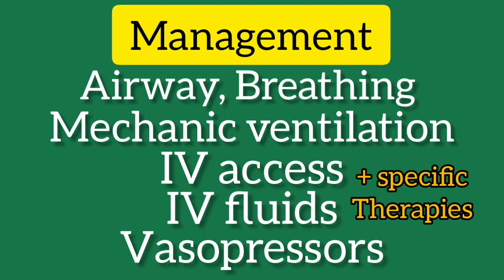In obstructive shock, judicious use of IV crystalloids is needed. If shock persists, early initiation of vasopressors — norepinephrine, and vasopressin if refractory. If acute massive pulmonary embolism is suspected, thrombolysis should be done. Note that aggressive IV fluids can paradoxically worsen hypotension due to severe right ventricular dilatation and septal bowing compromising left ventricular filling. If tension pneumothorax is suspected, needle thoracostomy should be done followed by tube thoracostomy.